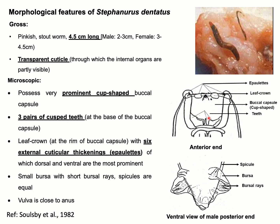There are three pairs of cuspid or angular teeth located at the ventral margin of the buccal capsule. There is presence of an external leaf crown located at the rim of the buccal capsule. Along with the leaf crown there is also presence of six external cuticular modifications or thickenings, also known as epaulettes. The male parasite has a small bursa with short equal spicules, and the vulva of the female is located close to the anus.